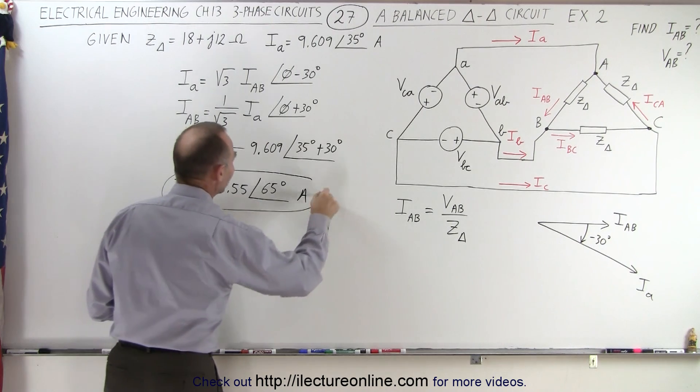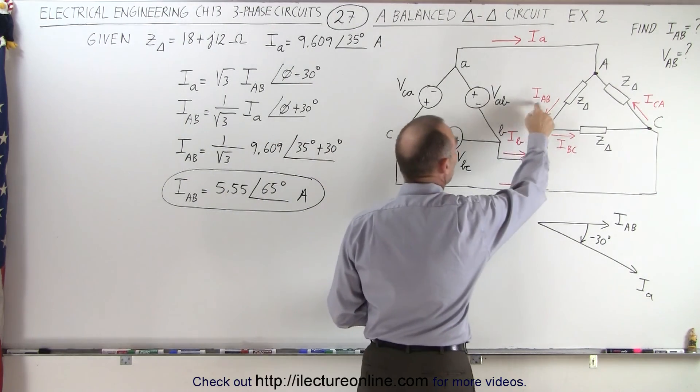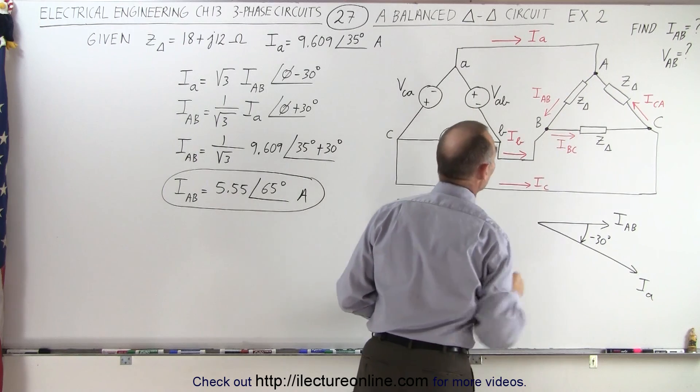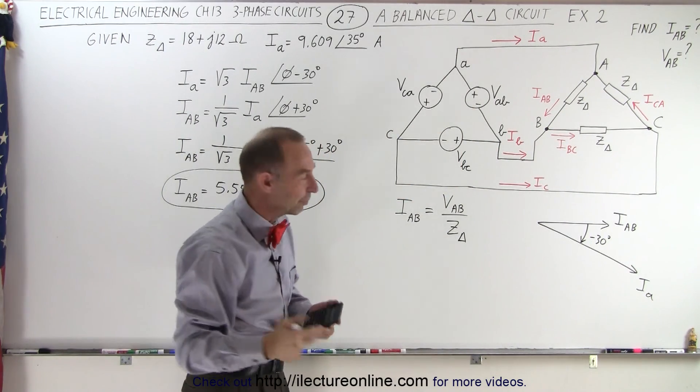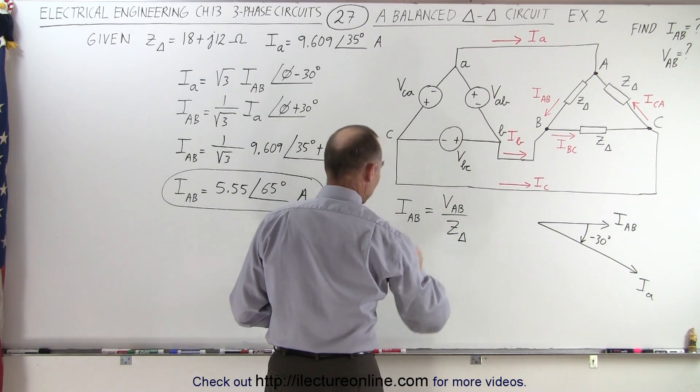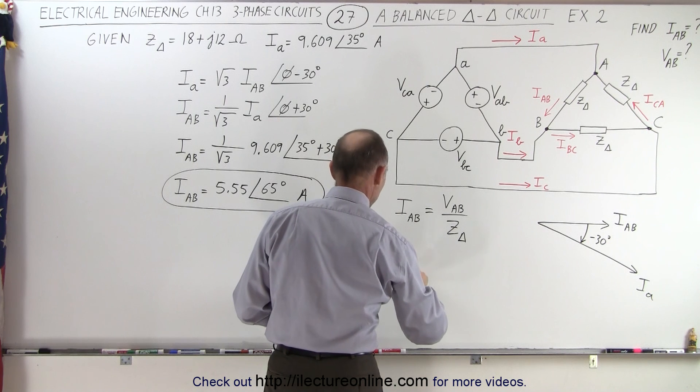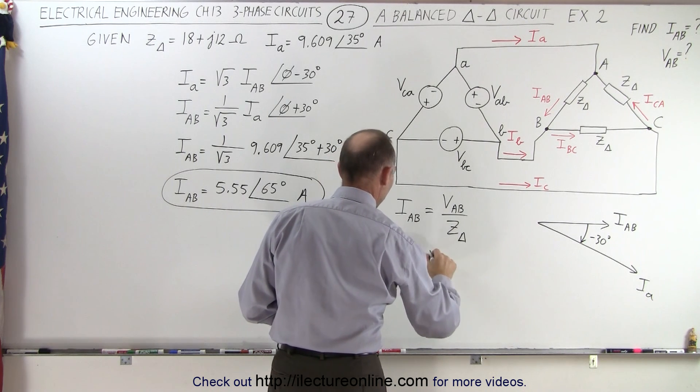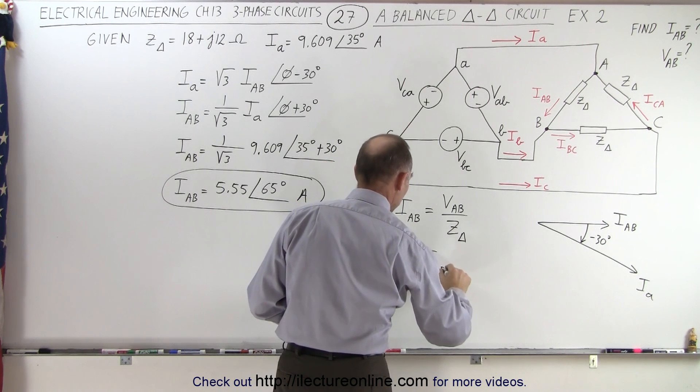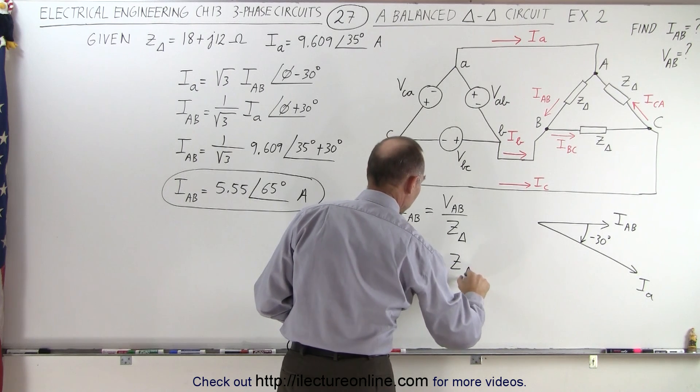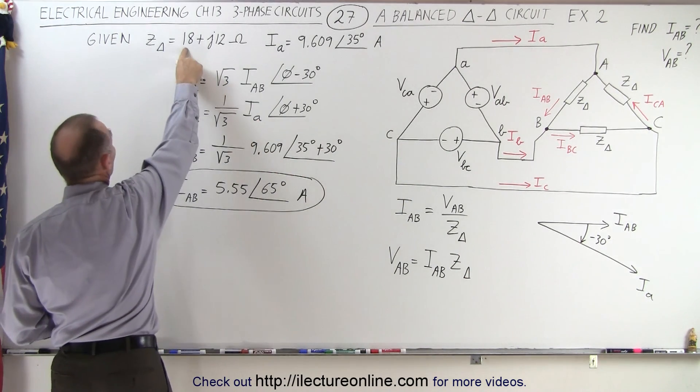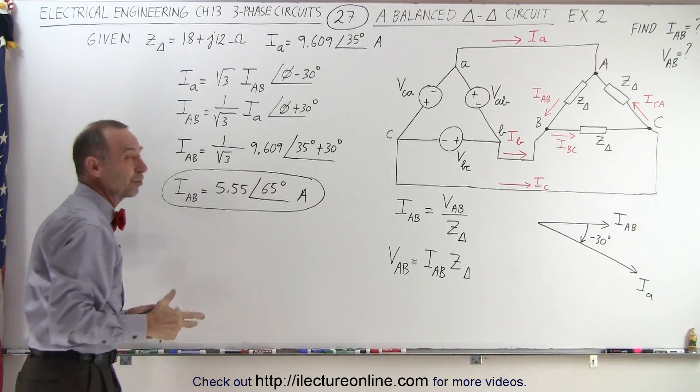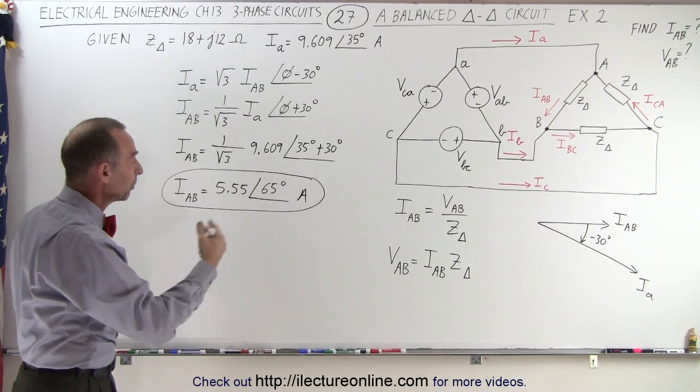So, now we have the phase angle IAB, and now we're ready to find the voltage from A to B, which would be considered the line voltage. Therefore, taking this equation, we can say that VAB is equal to IAB times the impedance of the load. Now, the impedance has been given to us in terms of real and imaginary parts, so we have to convert that so we can multiply.